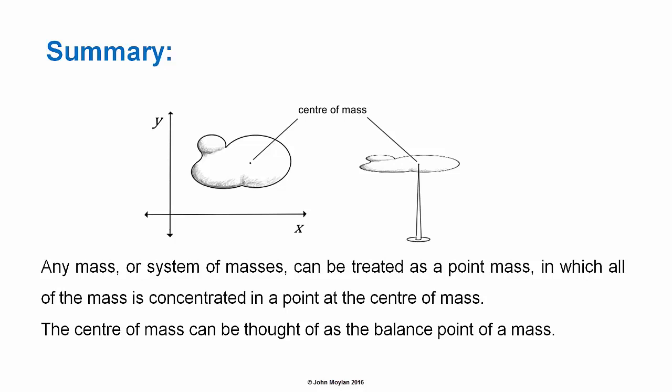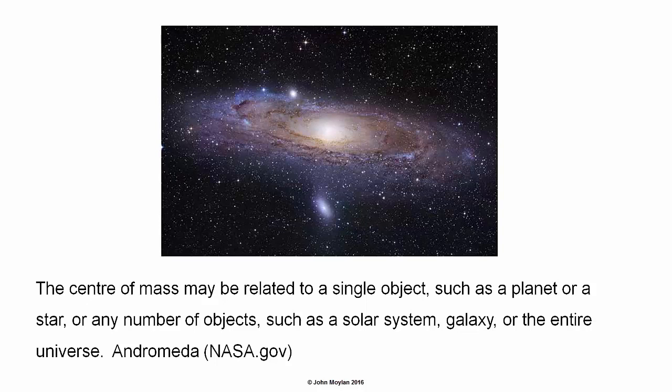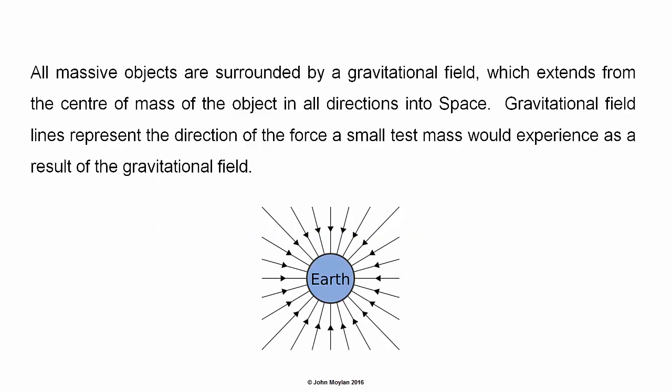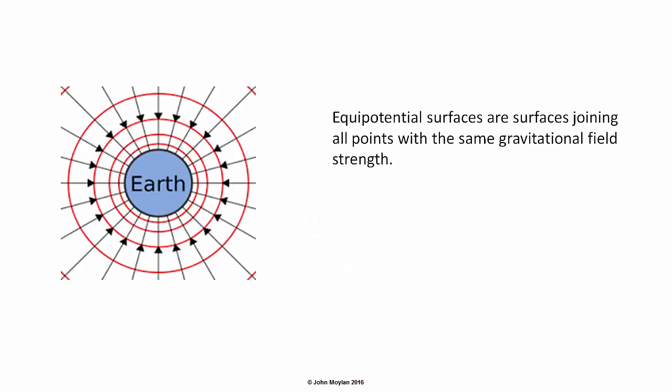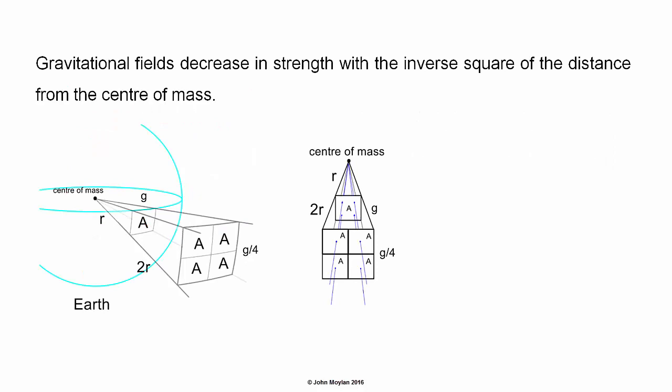Summary: Any mass or system of masses can be treated as a point mass in which all of the mass is concentrated at the center of mass. The center of mass can be thought of as the balance point of a mass, and may relate to a single object such as a planet or star, or any number of objects such as a solar system, a galaxy, or the entire universe. All massive objects are surrounded by a gravitational field extending from the center of mass in all directions into space. In a gravitational field diagram, field lines represent the direction of the force a small test mass would experience. Equipotential surfaces join all points on the field lines with the same strength of gravitational field. Gravitational fields decrease in strength with the inverse square of the distance from the center of mass, so that G is proportional to 1/R².